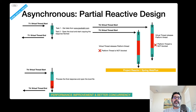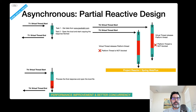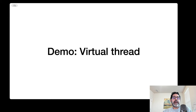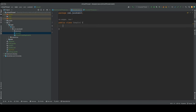One important thing to remember: virtual threads do not decrease the timeline for database or I/O calls. If a database call takes one second, it will still take one second whether using platform threads or virtual threads. The difference is: with platform threads you eventually run out and get out-of-memory errors; with virtual threads you can take virtually unlimited requests. I'll also show later how you can still exhaust memory with virtual threads if you code improperly.